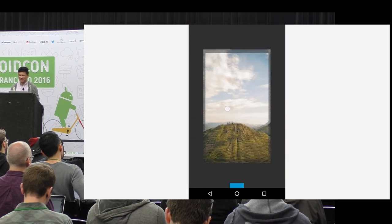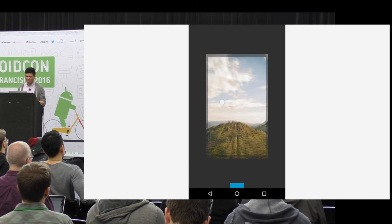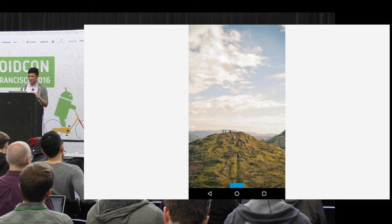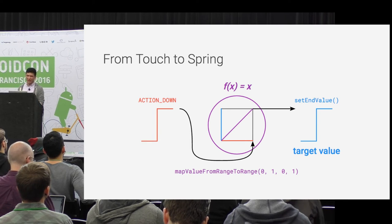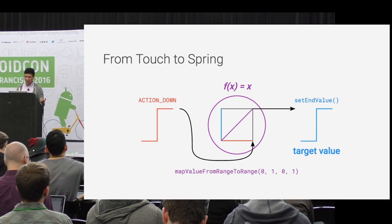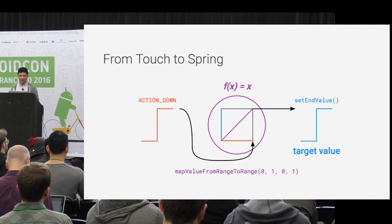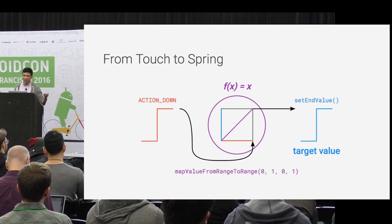This is the traditional Rebound example where you press on an image and it shrinks. You get an action-down motion event, you go from a previous value of zero to a value of one instantaneously, and map that to the spring. For scaling, you're not going from scale zero to scale one. On action down you set the end value to one, on finger lift you set end value to zero.